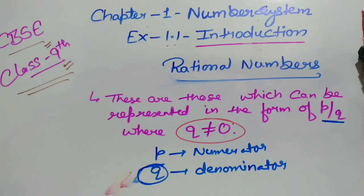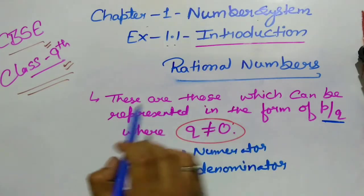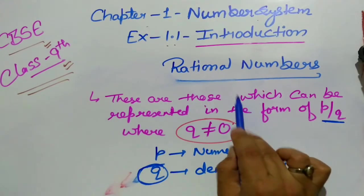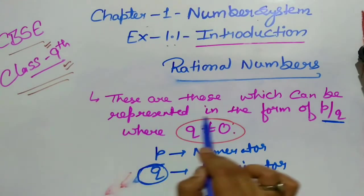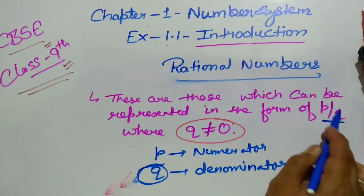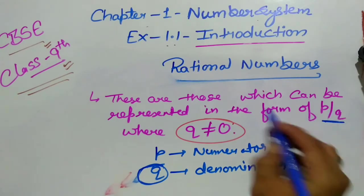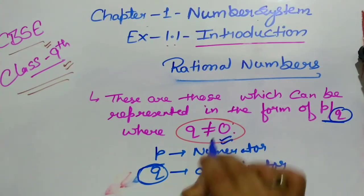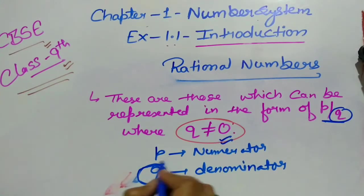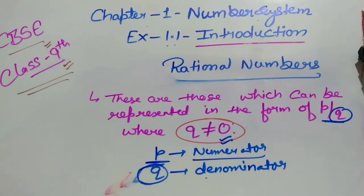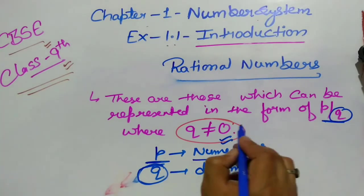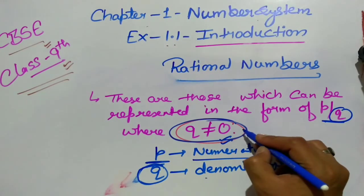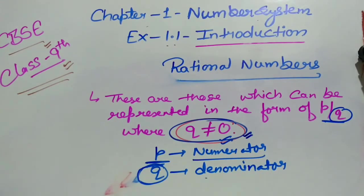0, 1, 2, 3, 4 — so these are those numbers which can be represented in the form of P upon Q, where Q is the denominator which should not be equal to 0. This condition — P upon Q where Q ≠ 0 — these are rational numbers.